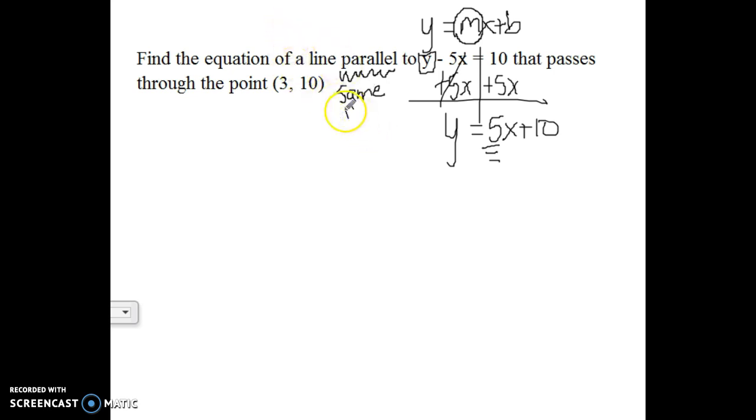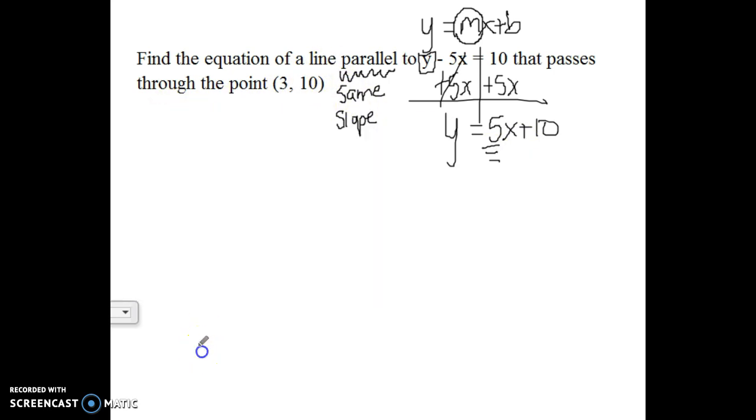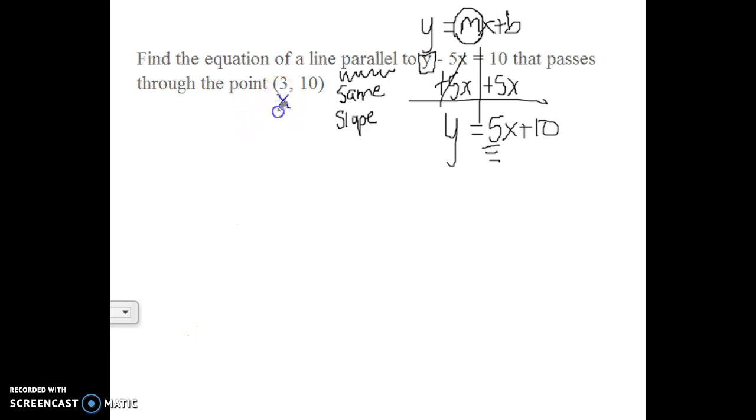So we know because we want it to be parallel, it has to have the same slope. So this is what I know so far. I know in my new line, I'm going to change colors here. In my new line, I know it has to go through this point. And I know that its slope or its m has to be 5. So I'm going to go ahead and just plug that into my equation with what I know. So my equation of a line is y equals mx plus b.